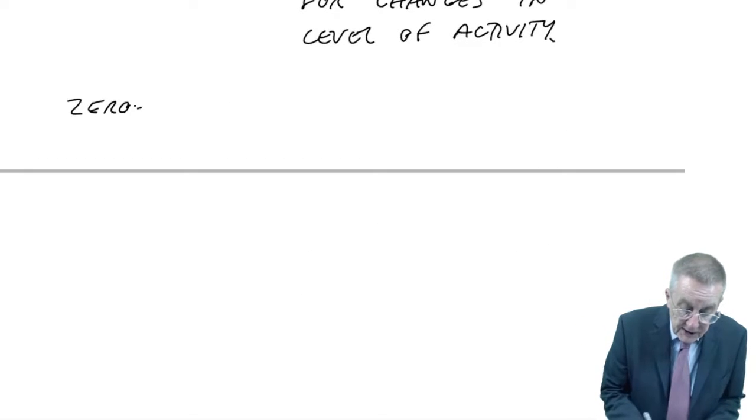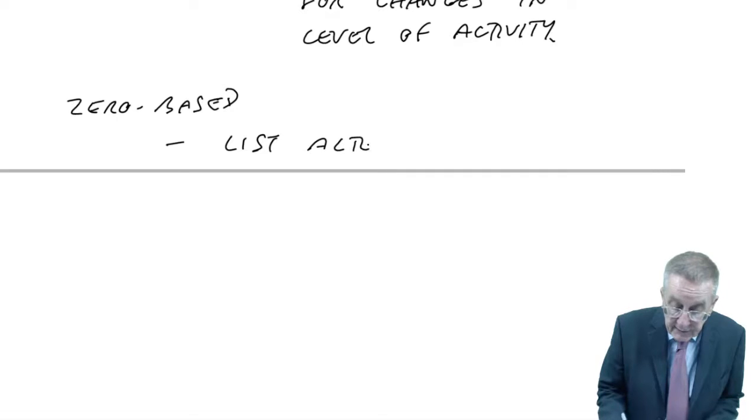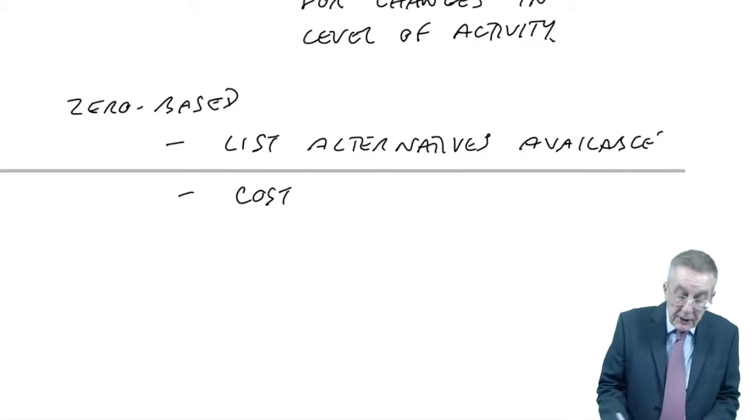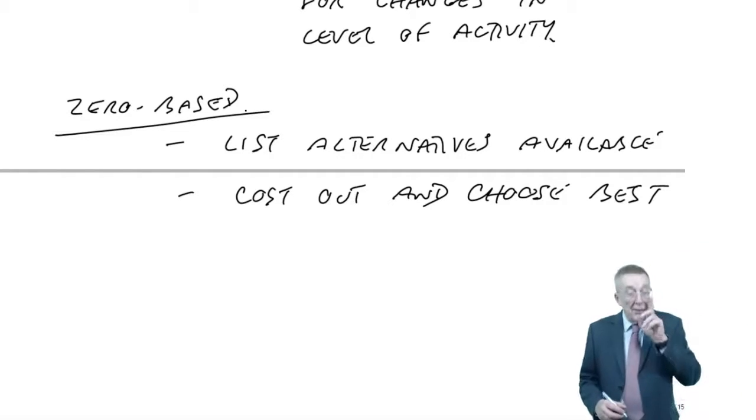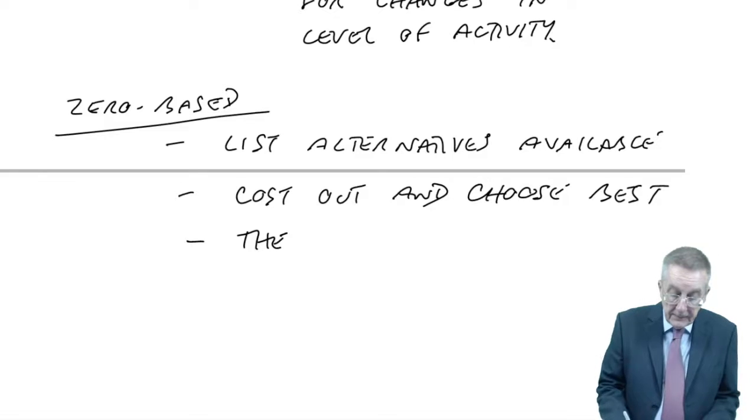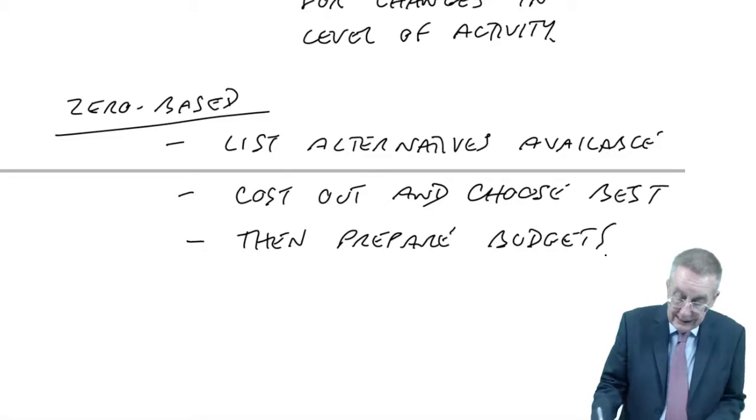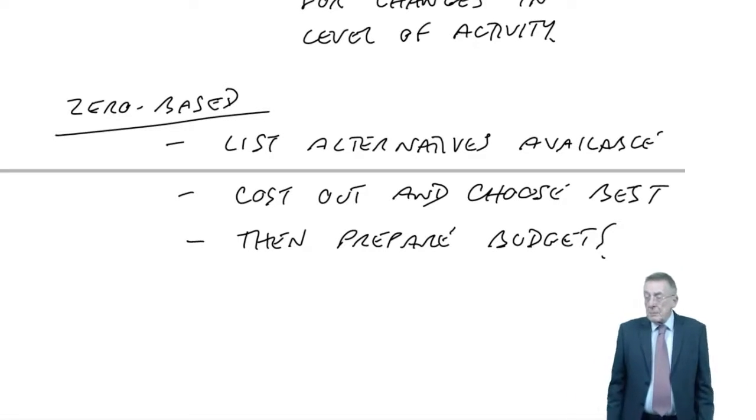With zero-based budgets, you list the alternatives available. So, that's fixed line, mobiles, internet. You cost out and choose the best. And then, you prepare the budgets.